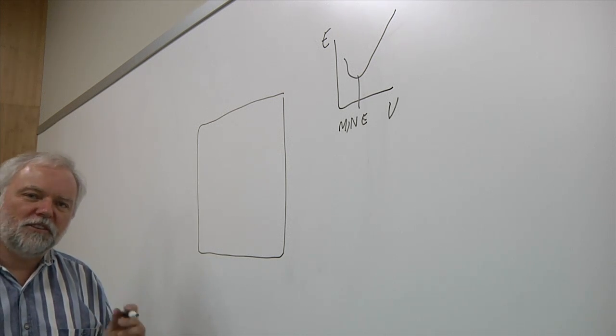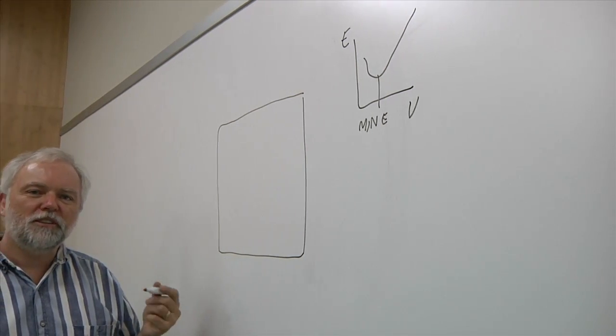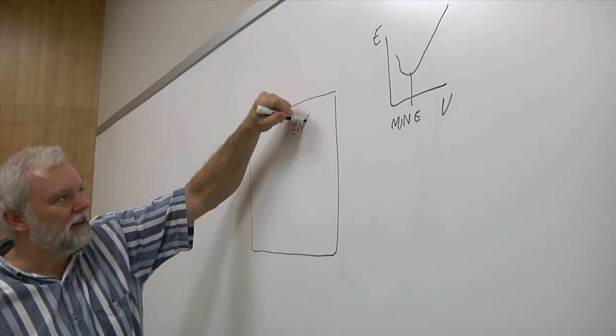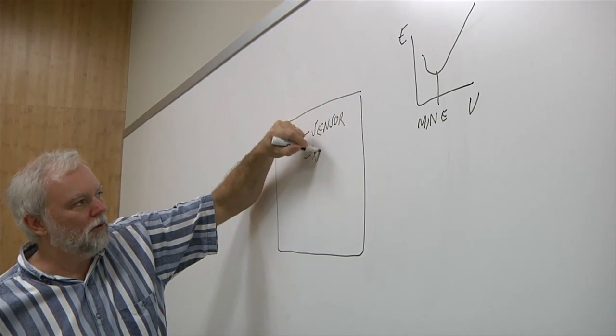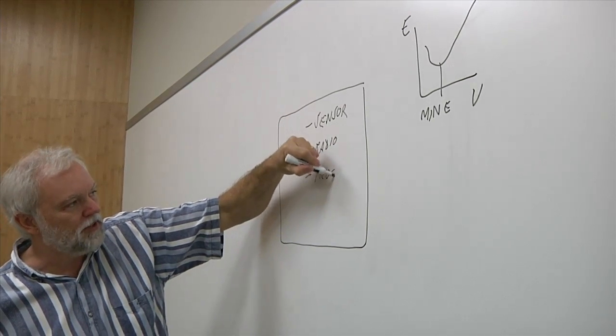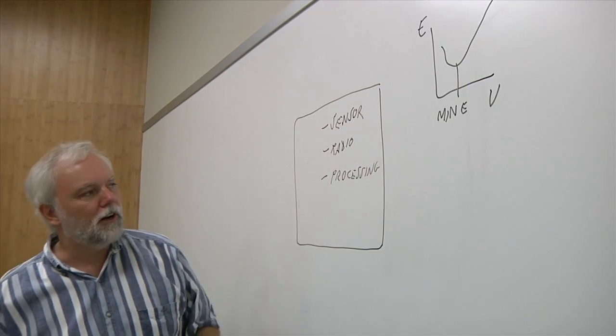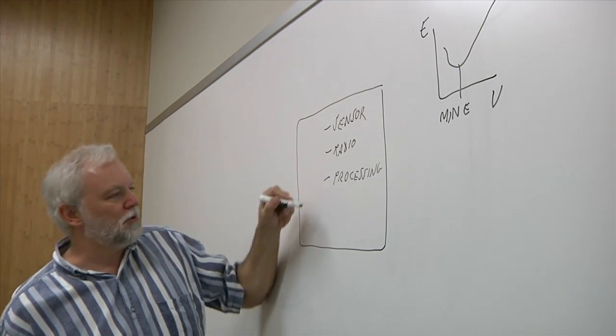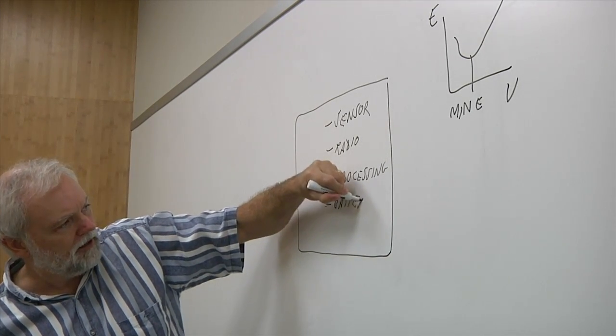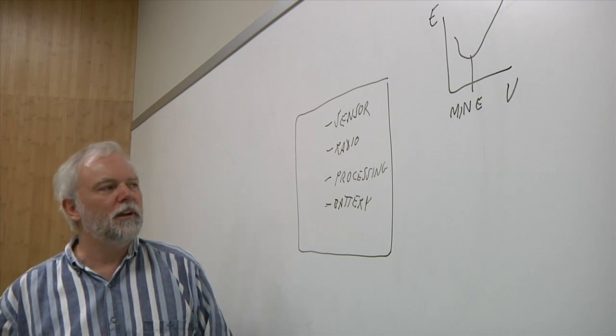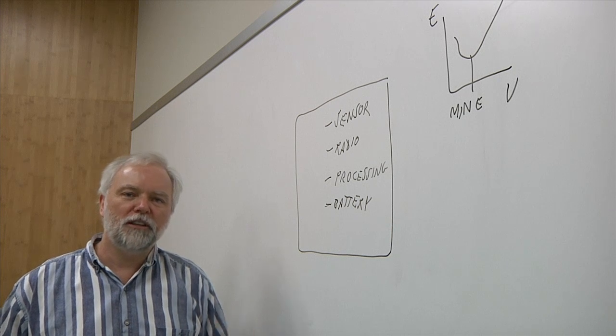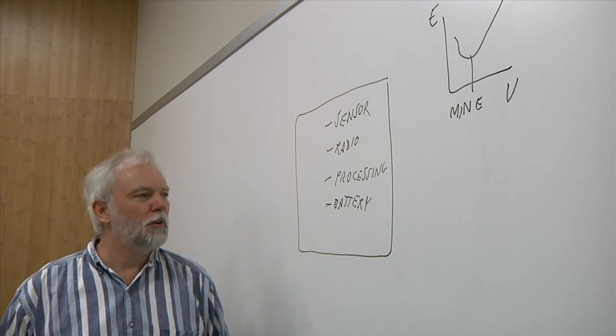So if I'm going to architect a system to work in this case, essentially what I'm thinking of for a typical leaf node, I may want to have a sensor of some kind. I'll have a radio for this thing to communicate, and I'm going to have some kind of processing that happens on the data that comes from the sensor, and I'm going to need some kind of a battery.